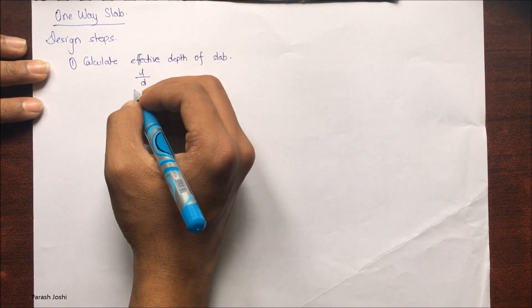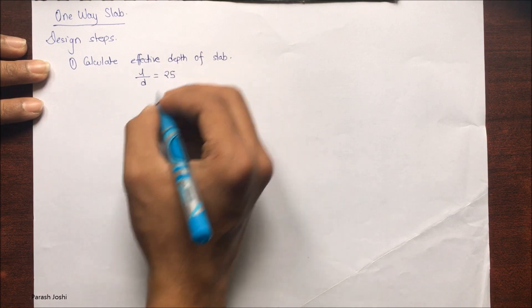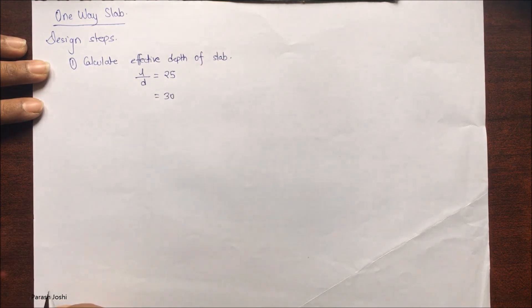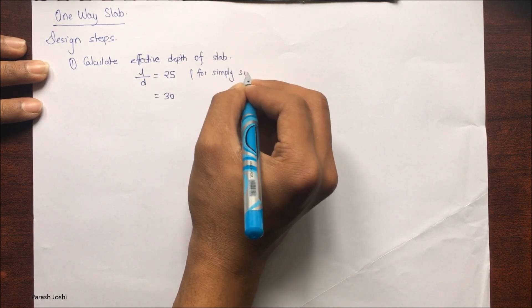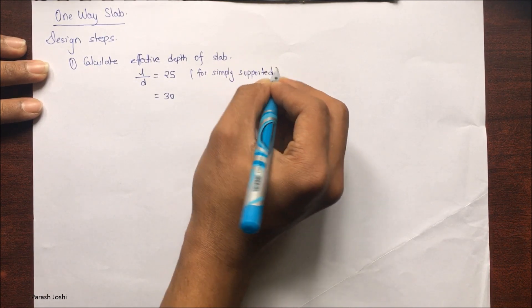L by D will be calculated through the ratio of length to depth, and we will take this value as 25 or 30 depending upon the type of slab. For simply supported it is taken as 25 and for continuous slab it is taken as 30.